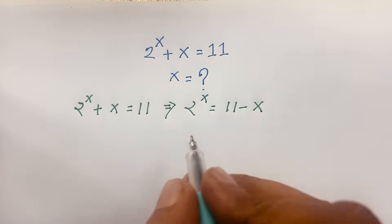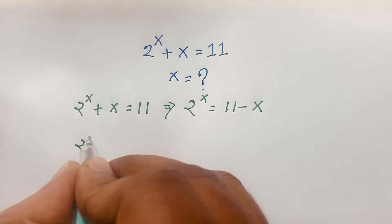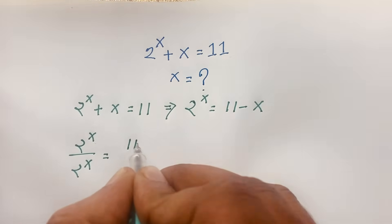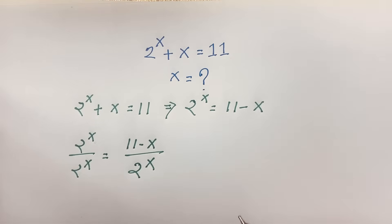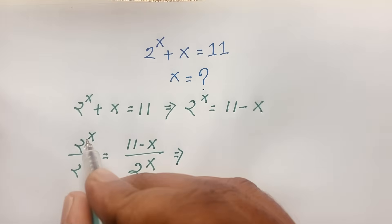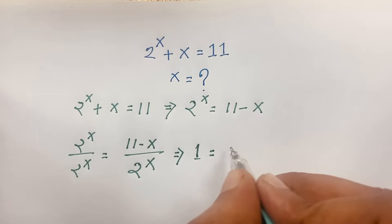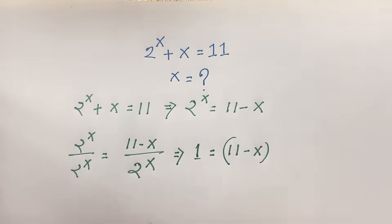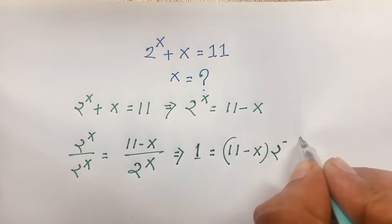Now I divide both sides by 2 to the power x. So 2 to the power x divided by 2 to the power x gives 1, which equals (11 minus x) over 2 to the power x. Using the law that 1 over a to the power n equals a to the power minus n, this becomes 1 equals (11 minus x) times 2 to the power minus x.